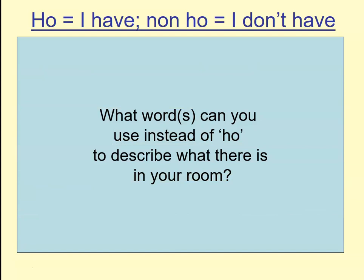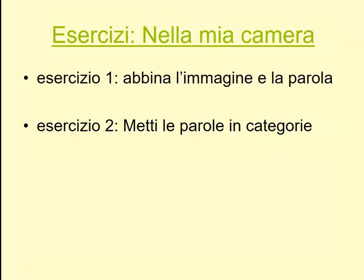Some of the phrases you may have been saying: ho un letto, ho un armadio, non ho uno scaffale. Remember that in Italian the word non at the front makes the phrase negative. Una domanda — what words can you use instead of ho? Some of you may remember c'è, meaning there is. So if you get bored of saying ho or non ho, you can use c'è — it's c apostrophe e with an accent, and it means there is.